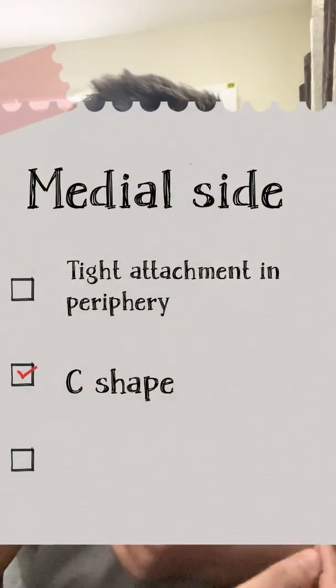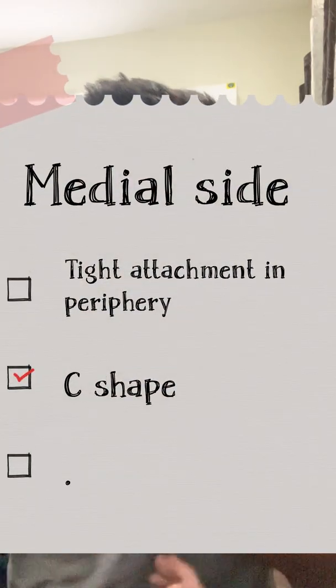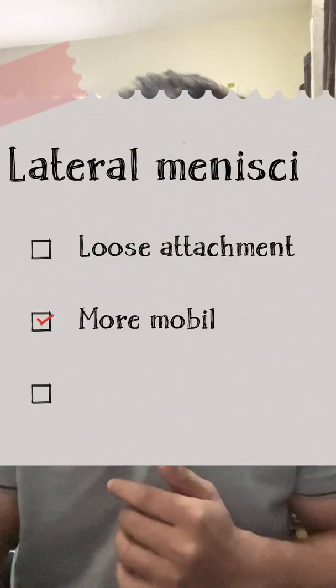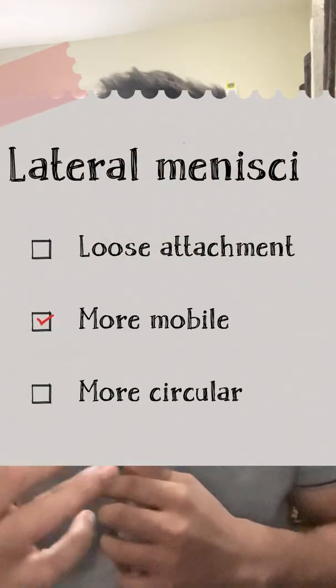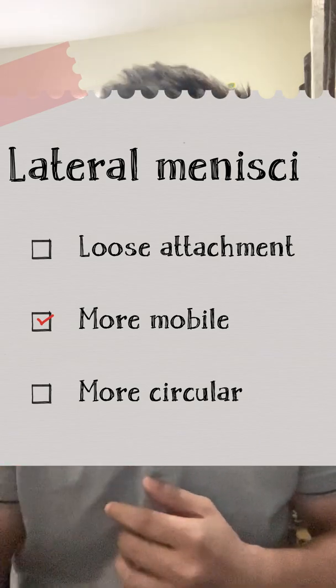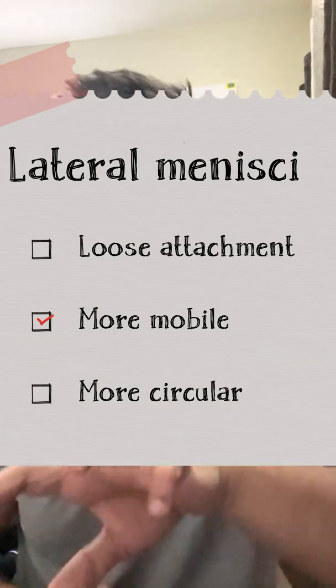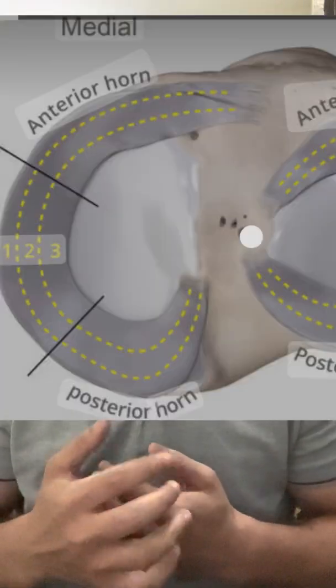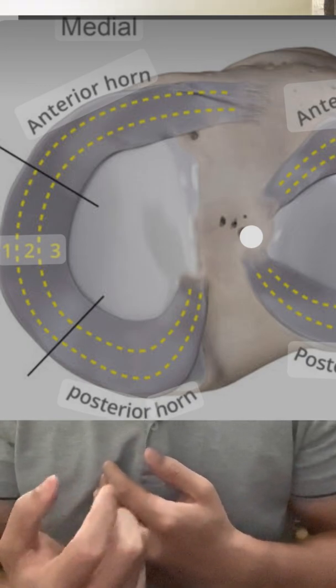Most commonly, cysts occur on the medial side. The medial meniscus gets torn more commonly because of its firm capsular attachment in the periphery, whereas the lateral meniscus has a more circular shape with loose peripheral attachment and doesn't tear as easily. Within the medial meniscus, the most commonly torn part is the posterior horn.